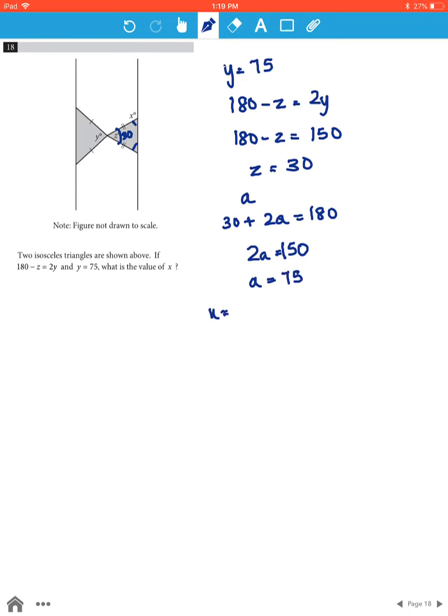Now, x will be 180 minus a, since angles on a straight line add up to 180 degrees. Therefore, x will be 180 minus 75, so x will be equal to 105.